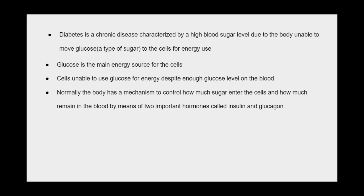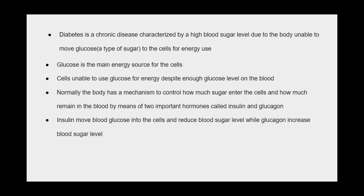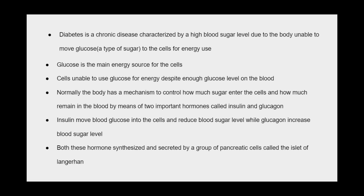Normally the body has a mechanism to control how much sugar enters the cells and how much remains in the blood, by means of two important hormones called insulin and glucagon. Insulin moves blood glucose into the cells and reduces blood sugar level, while glucagon increases blood sugar level. Both hormones are synthesized and secreted by a group of pancreatic cells called the islets of Langerhans.